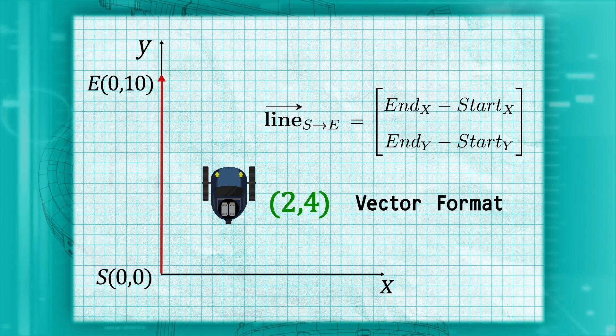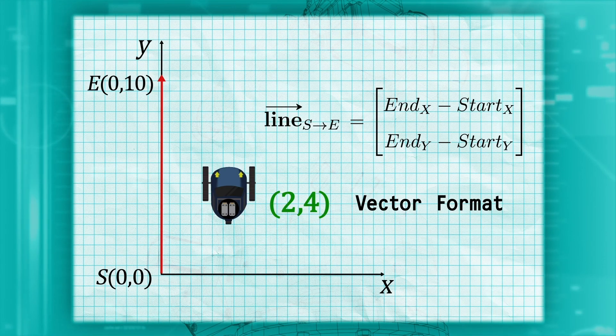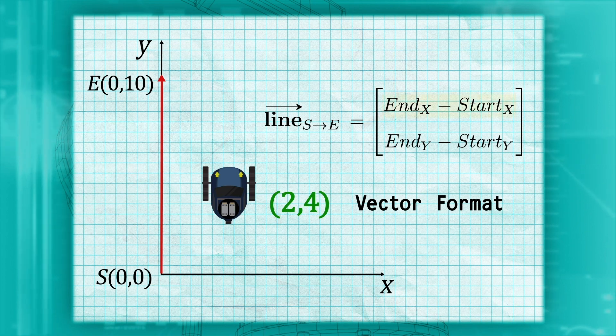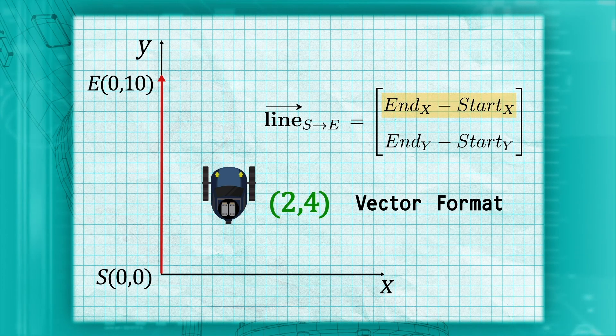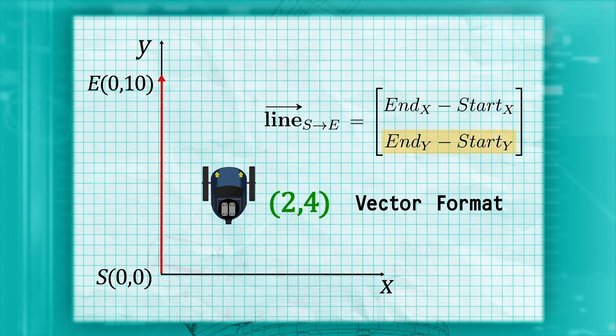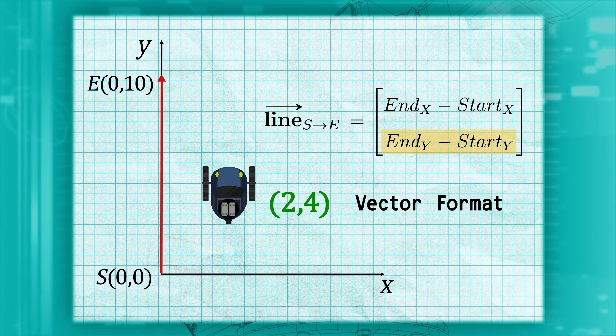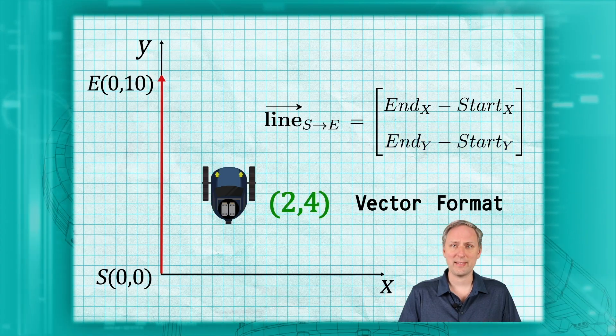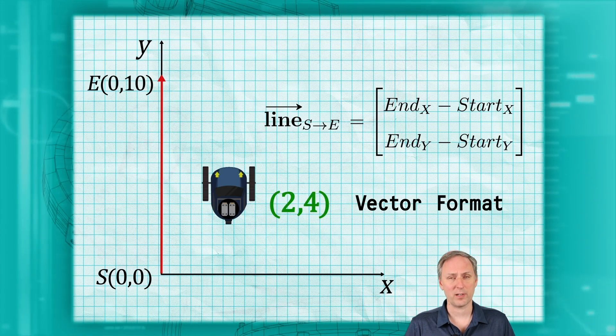The vector is more than a single number. It is a column of numbers. Our vector has two elements. The top one is the difference in the x-coordinates between the start and end points. The bottom element is the difference in the y-coordinates.